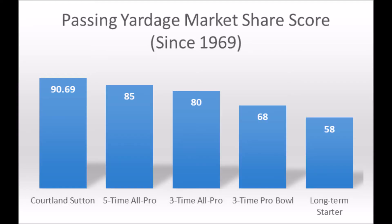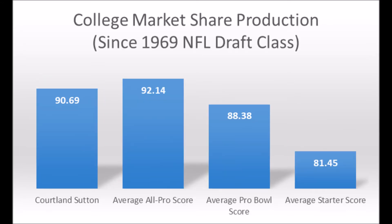Starting with Cortland Sutton's production data — something you should already be familiar with if you've seen past videos — he had a 90.69 overall score when it comes to his passing yards market share production, which pretty much hits every single threshold for five-time all-pro, three-time all-pro, three-time pro bowl, and long-term starter. He's a bit below the average for all-pro players but above average for pro bowl players and average starters, making his market share data pretty fantastic — one of the more productive wide receivers in this draft class.